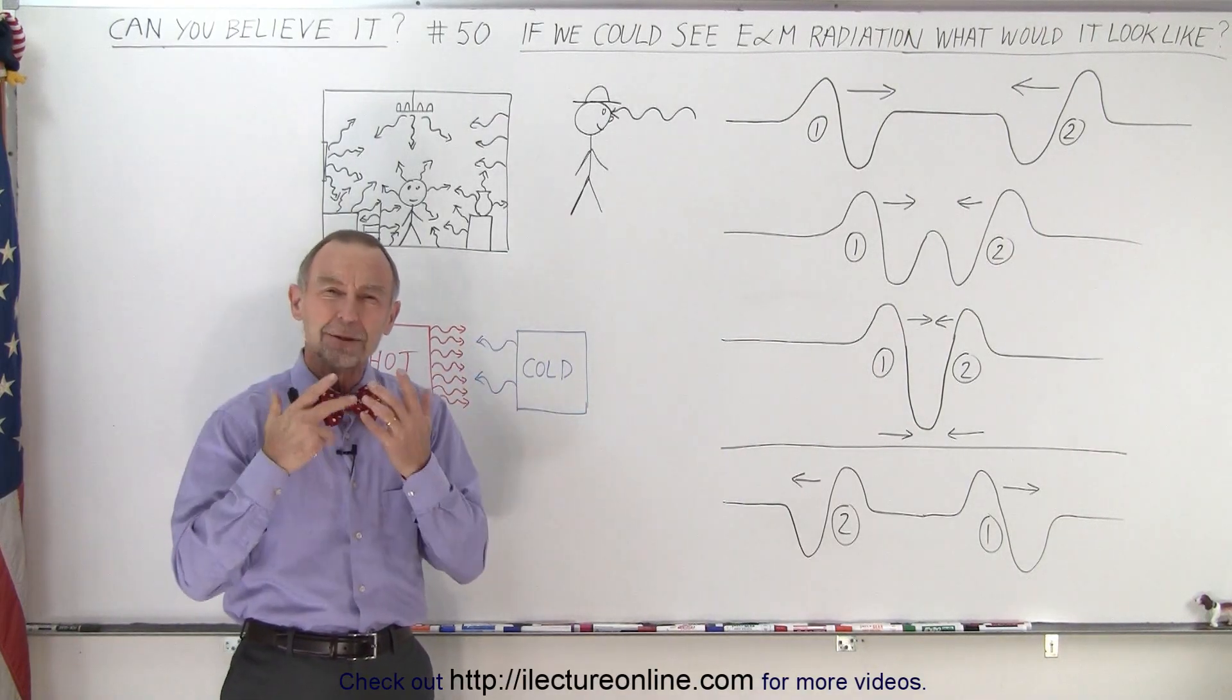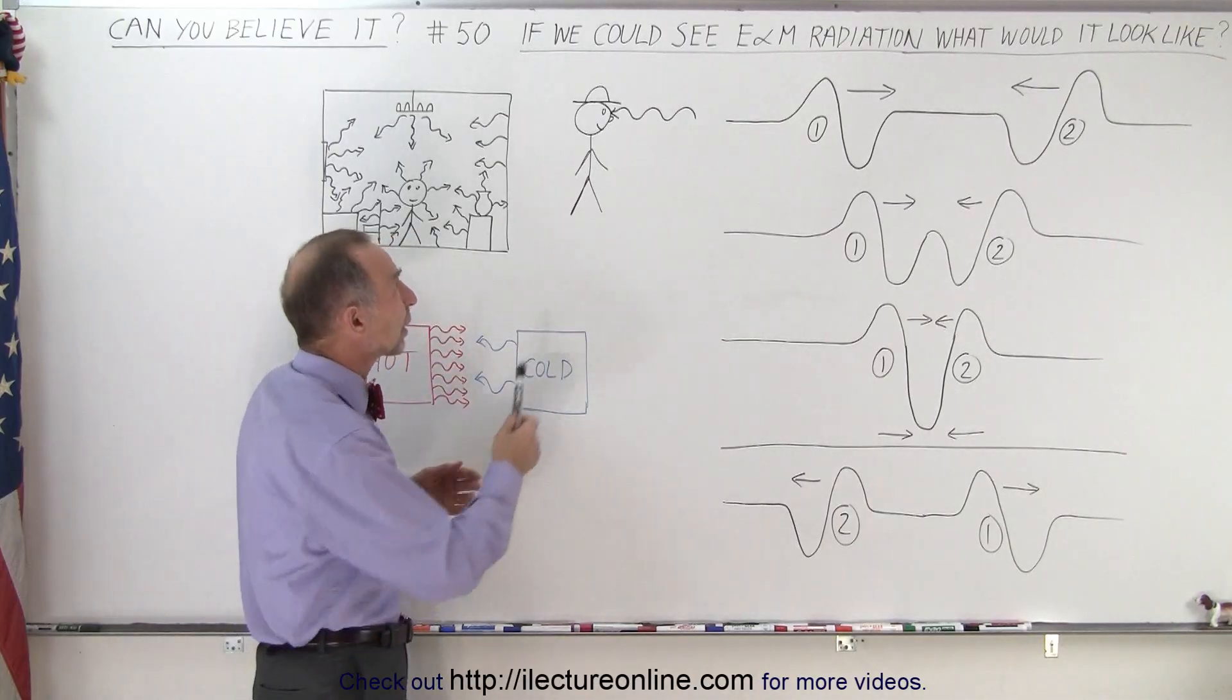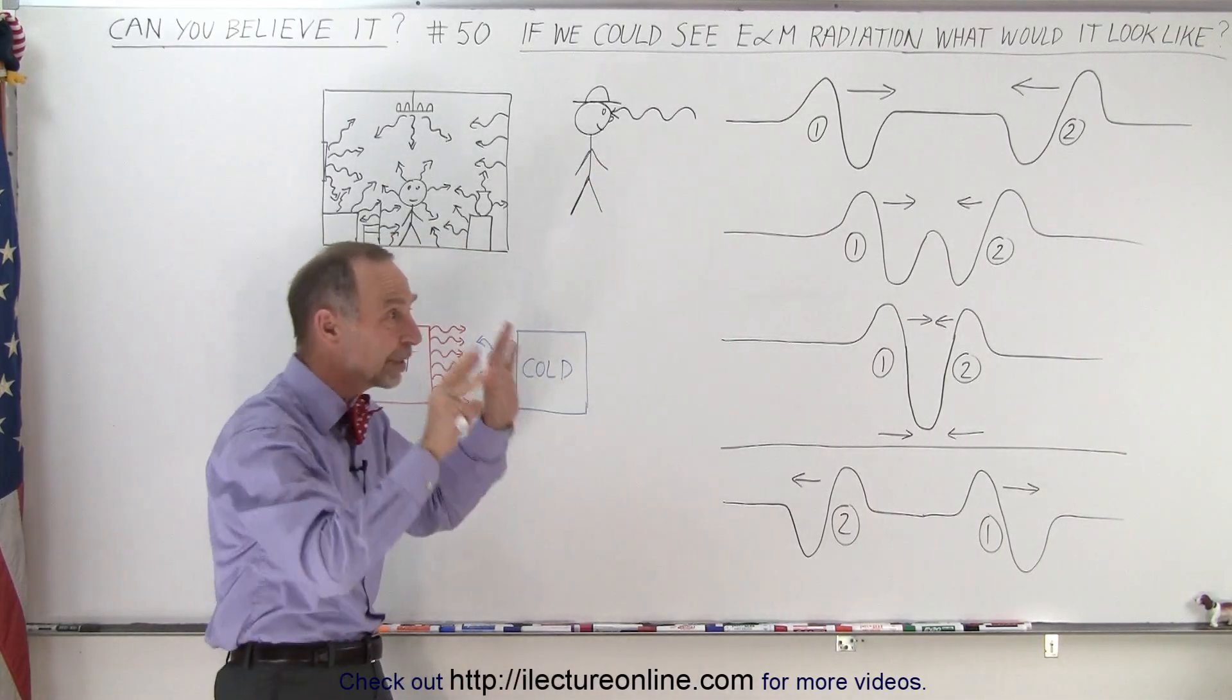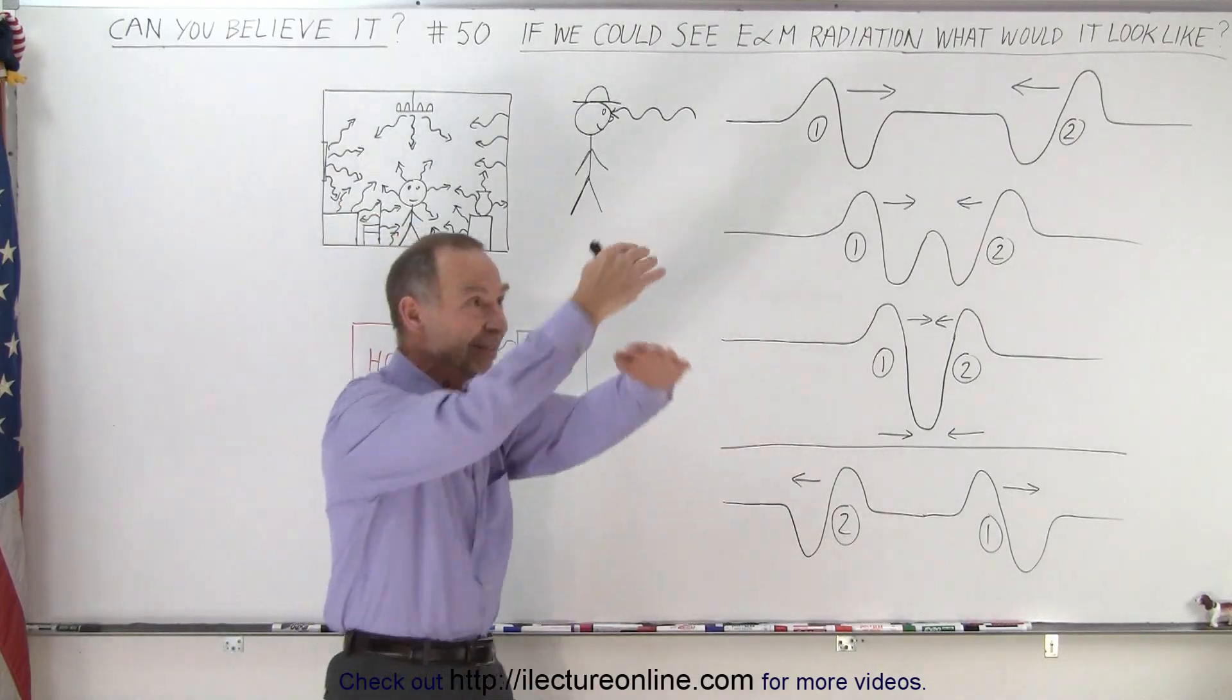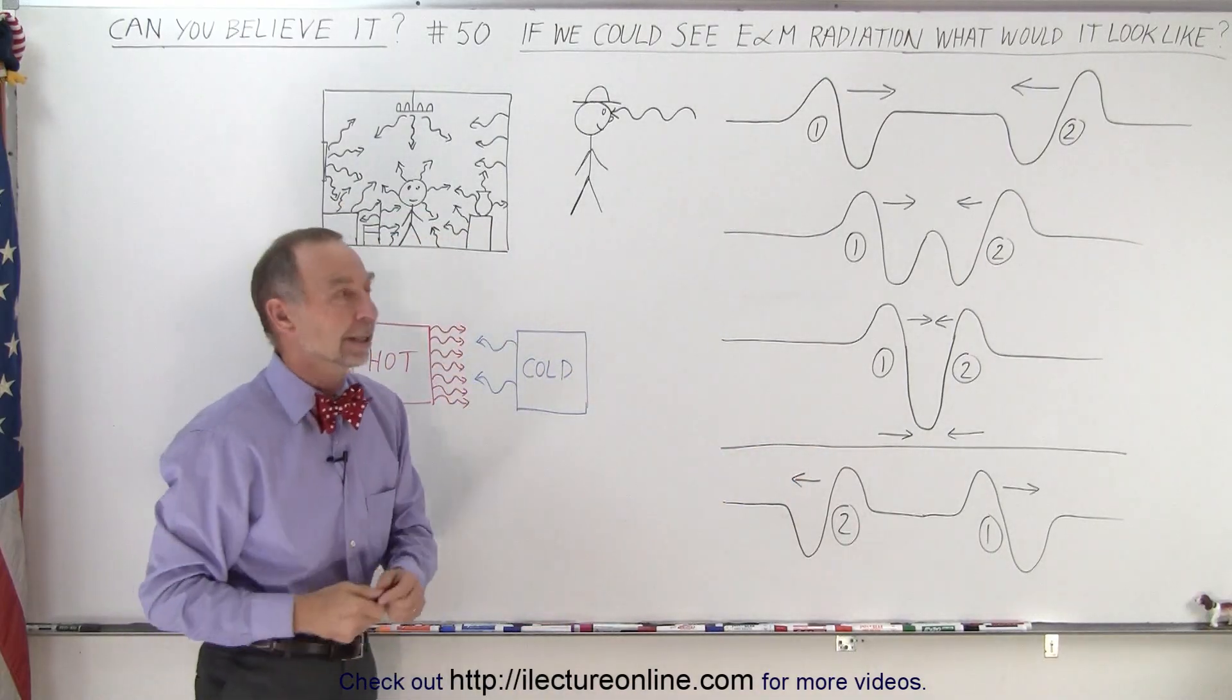What if we could see it? Well, the problem is, of course, that we understand that we can only see radiation if it enters our eyes. But what if we could watch it at a distance? What if we could see radiation passing by us? What would it look like?